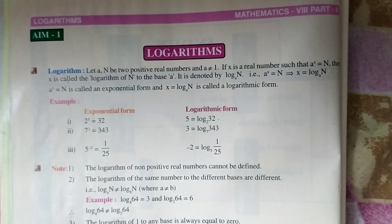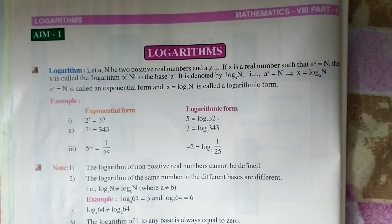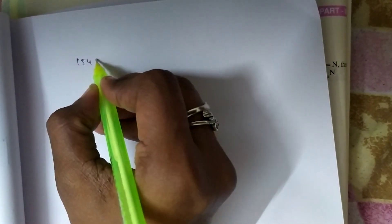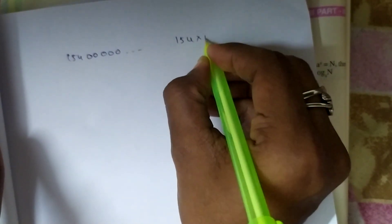Basically, logarithms and exponentials are inverse to each other. When we use exponentials, suppose if you want to consider the distance between earth and the sun, it is too far — a very big distance. You would be writing like 144,000,000... it goes on. In exponential form, we can write it easily like 154 into 10 to the power of 38 kilometers. So to describe a very large distance, we can use exponentials.